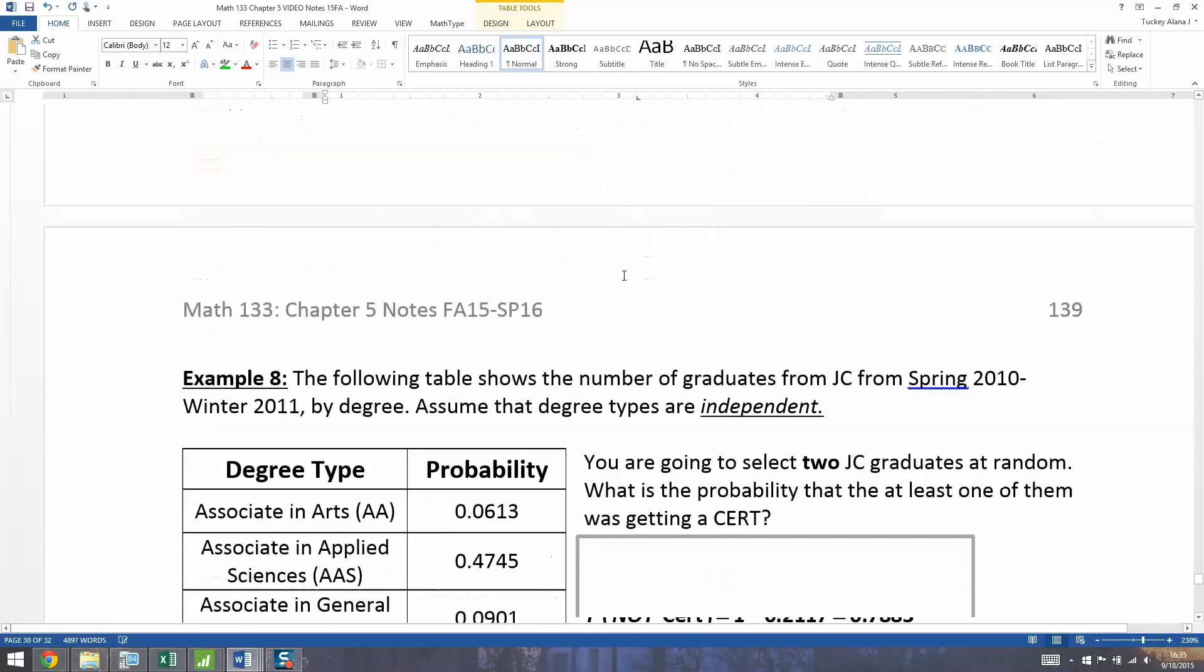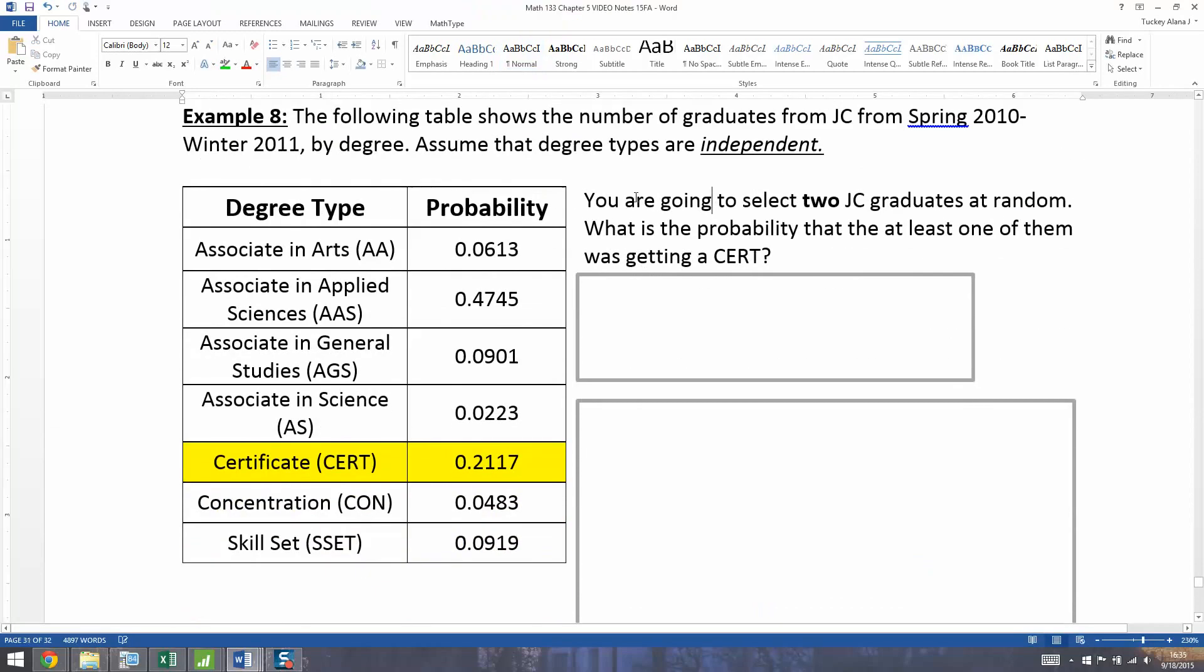And we saw this little example here with roulette, which was actually pretty easy both directions, but we soon realized that in the long run the one that uses this yellow row down here at the bottom will actually be the better way to do it. That's the probability of none, no wins, and then subtracting from one. So we're going to use that for graduates. We're going to select two graduates at random, just like roulette. What is the probability that at least one of them was getting a certificate?